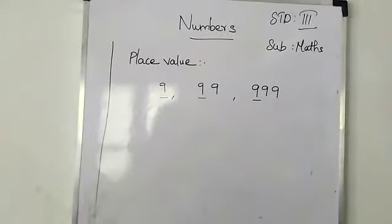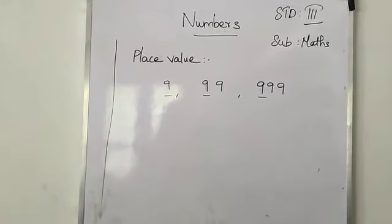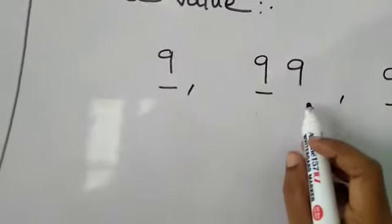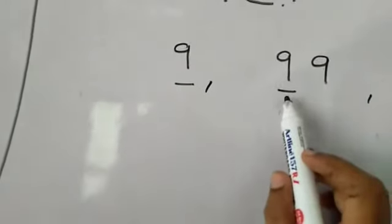First having only 1 number. So the place value is 1s. Next one, having 2 digit number, 99. So this is 1s, this is 10s.